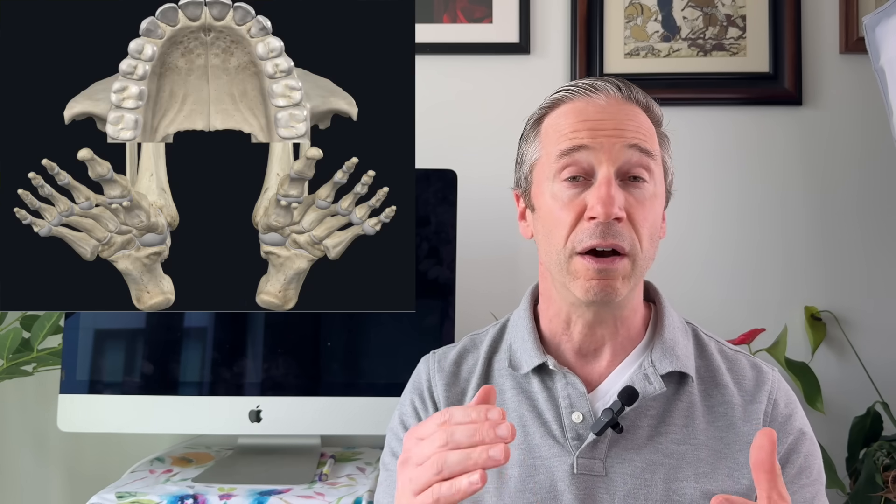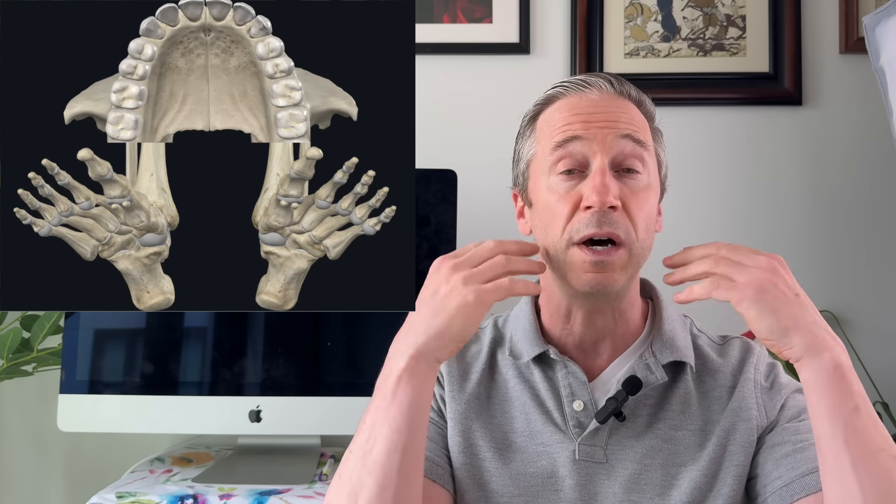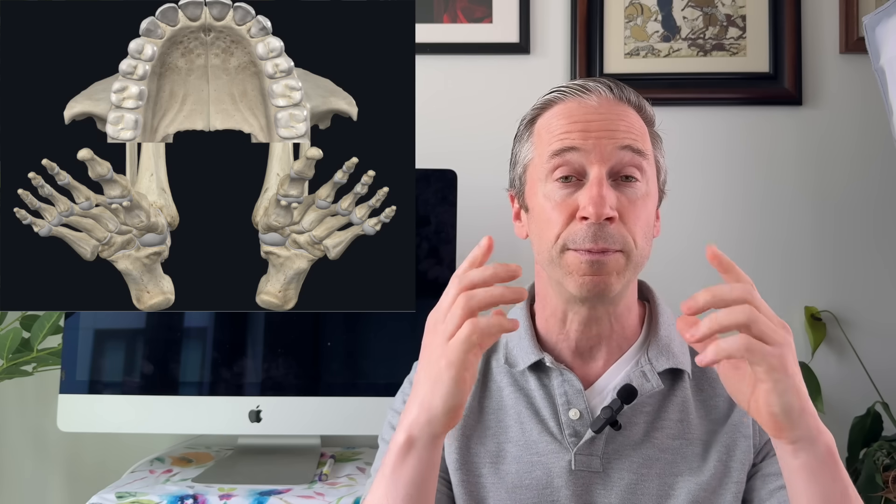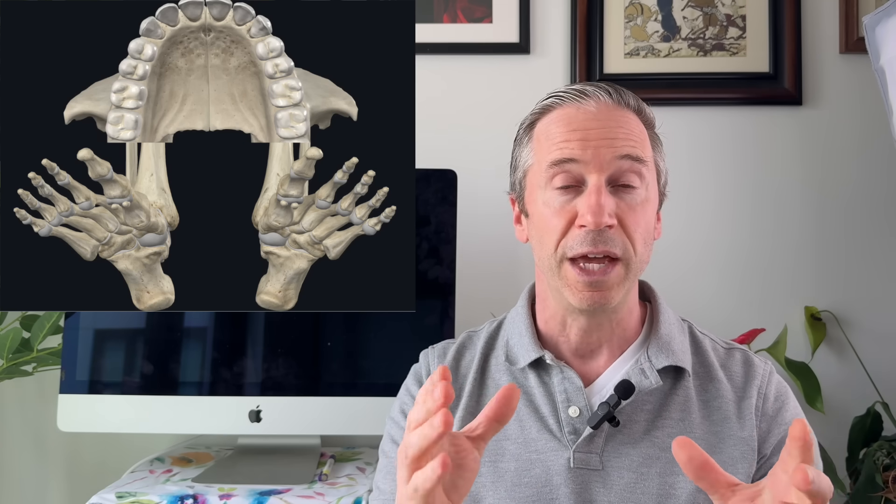For normal human movement to occur, you need a harmony of what's going on with the feet as they interact with the ground, and also what's going on up above in the cranium — really meaning the jaw and the teeth. This is what you need for normal forward, non-compensatory movement.